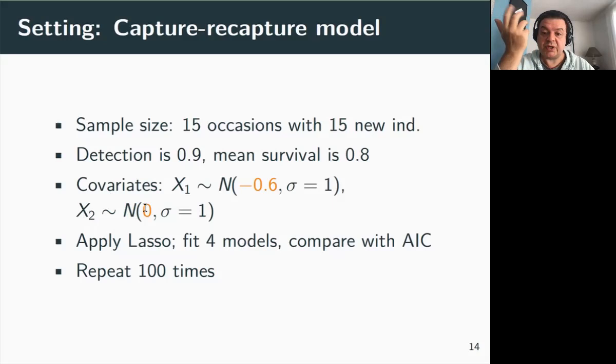We applied the lasso on the model with these two covariates. And also, we fitted four models: a model with no covariate and constant survival, another model with both covariates, and two other models with only X_1 or only X_2. For each of these models, we calculated the value of AIC. And we compared these four models with AIC to determine which model was best supported by the data, according to AIC, and compared that to the lasso. And we repeated this procedure 100 times.